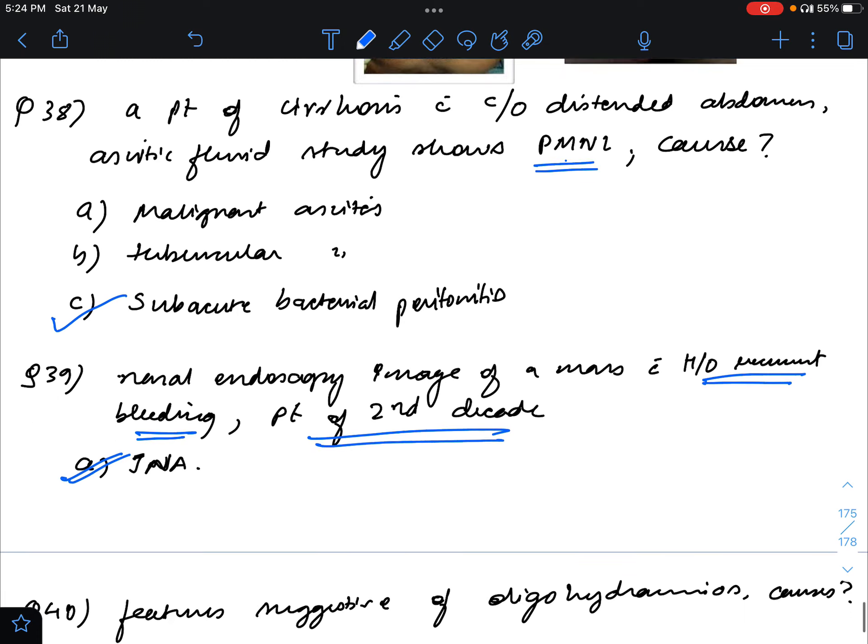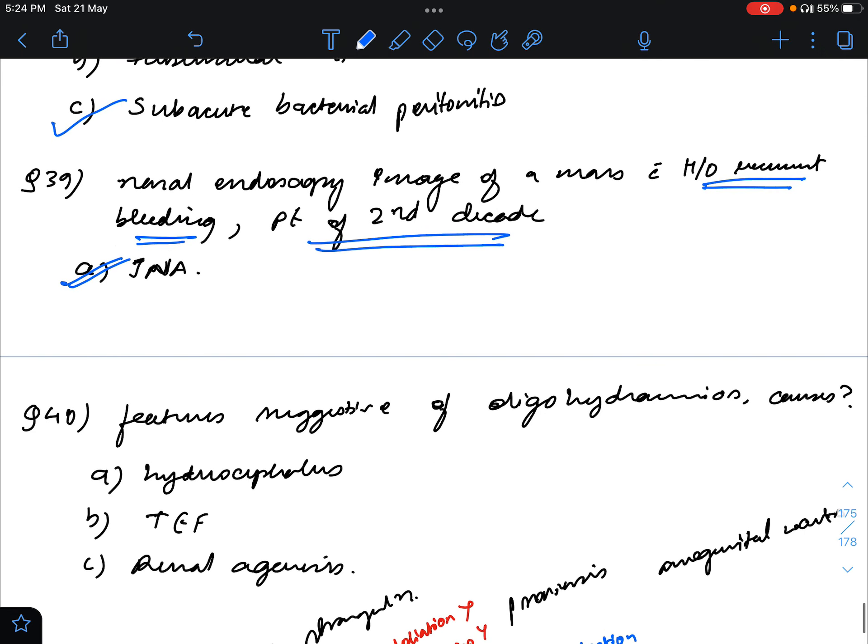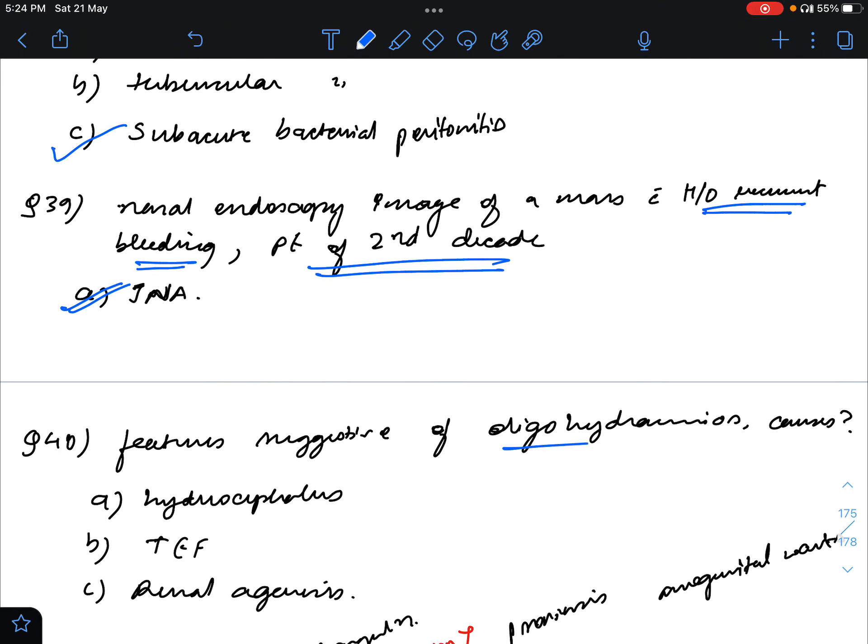Question 40: There were features suggestive of oligohydramnios in a mother. What is the anomaly in the fetus? In TEF or esophageal atresia there should be polyhydramnios, but in renal agenesis since there is no secretion, there is no urination, so the amniotic fluid will be less. The answer is renal agenesis which will result in oligohydramnios.